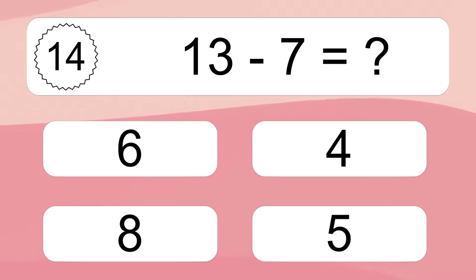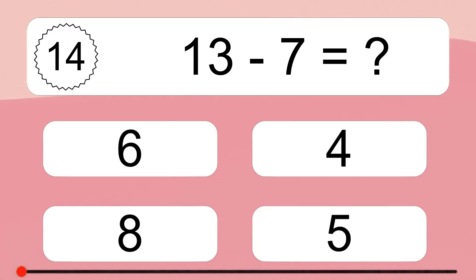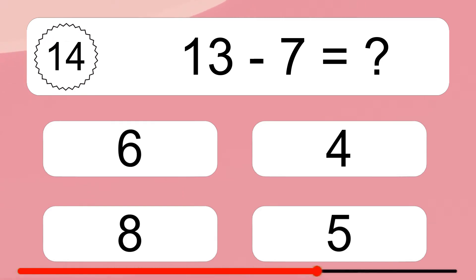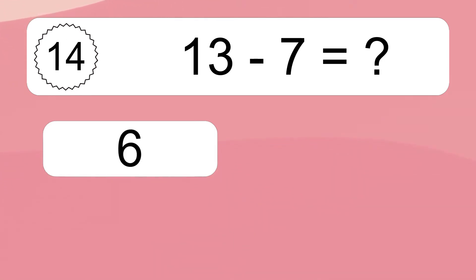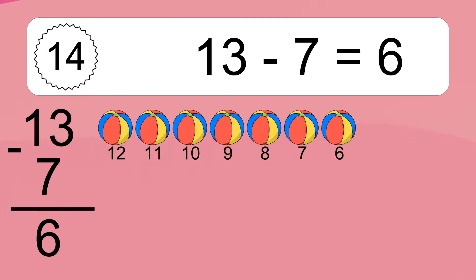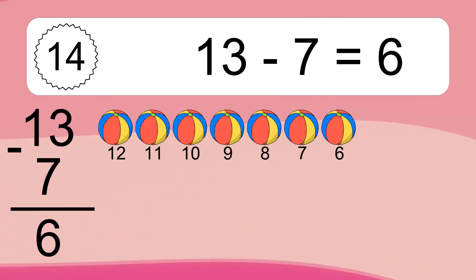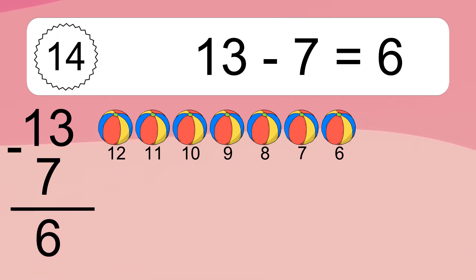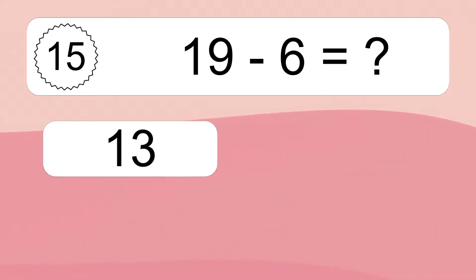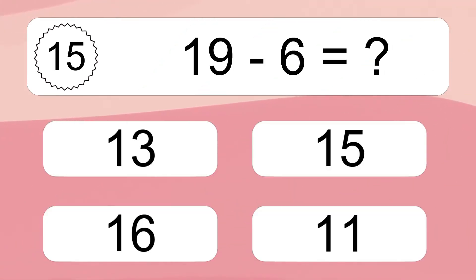13 minus 7 equals what? 13 minus 7 equals 6. Let's count it. 12, 11, 10, 9, 8, 7, 6.